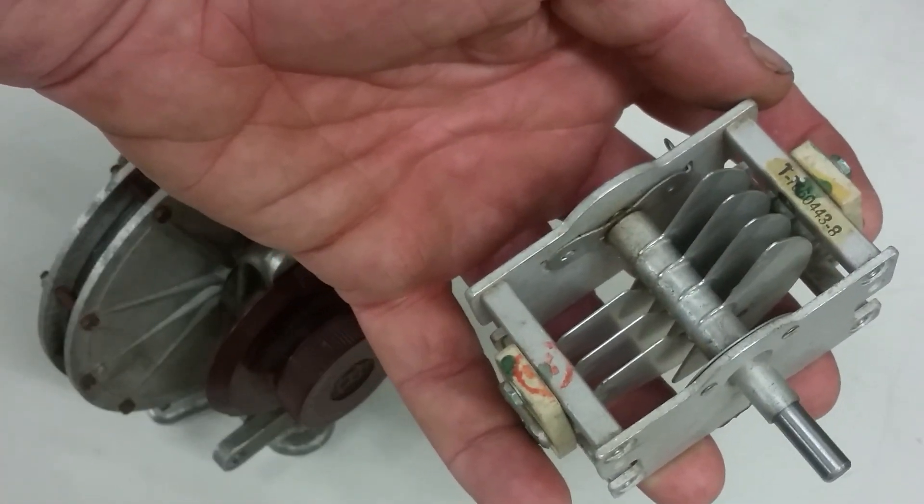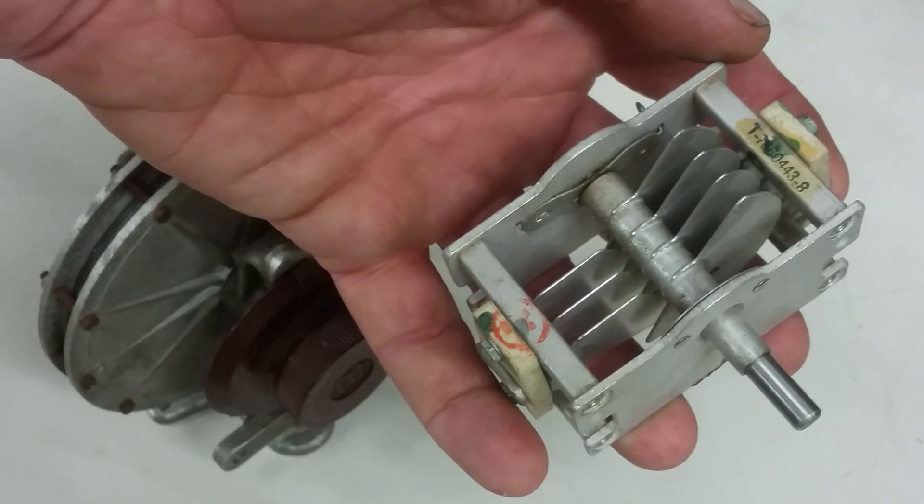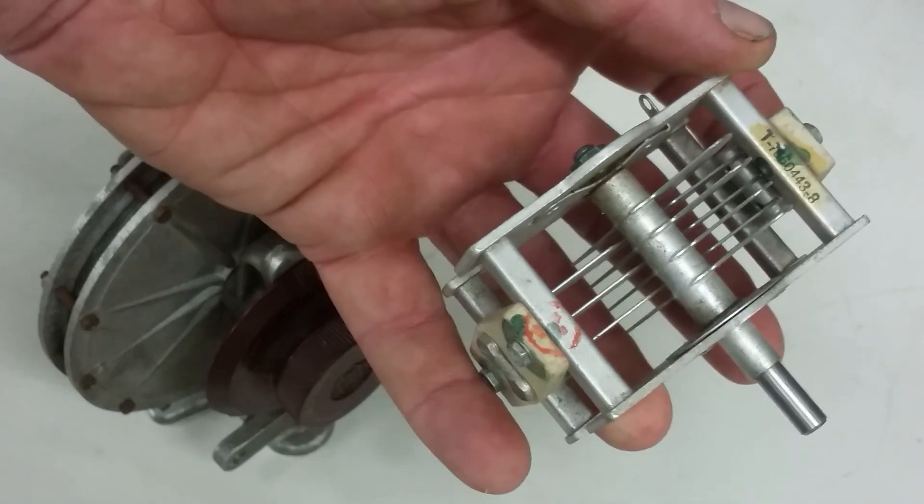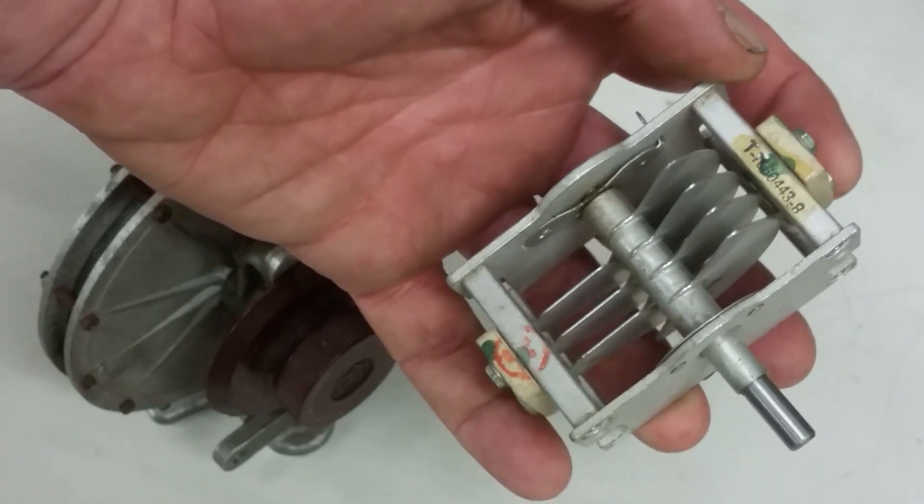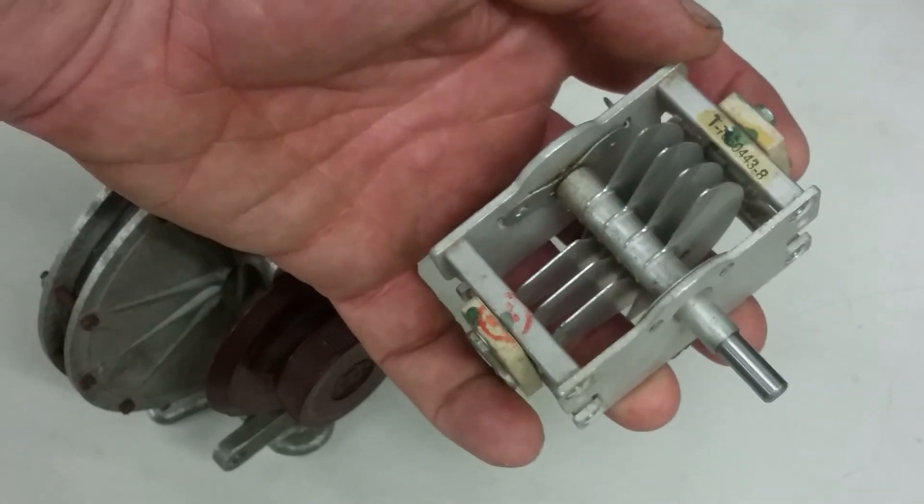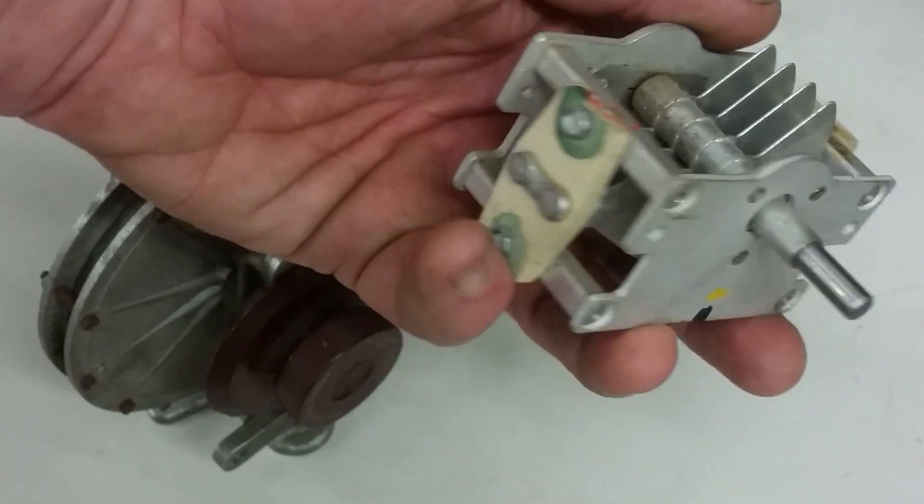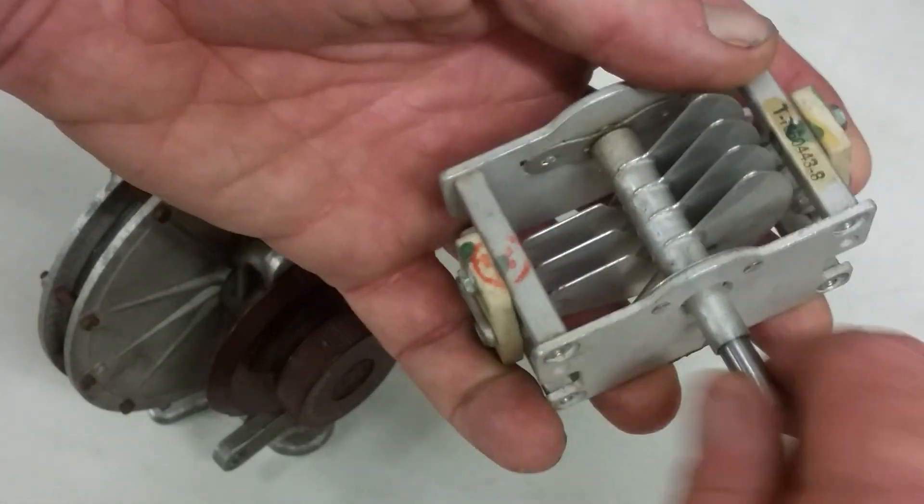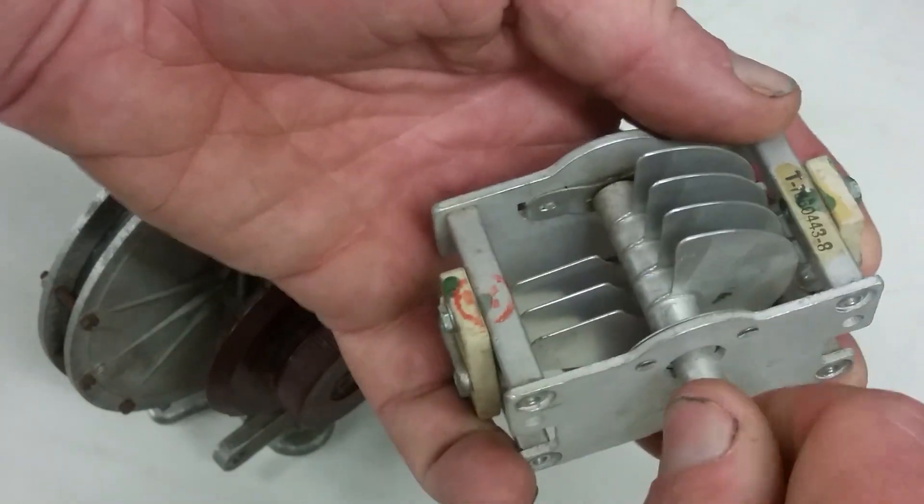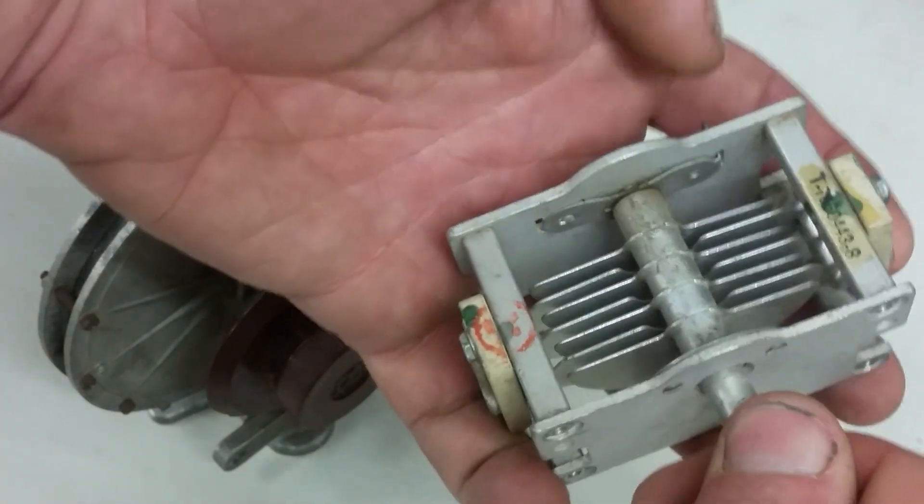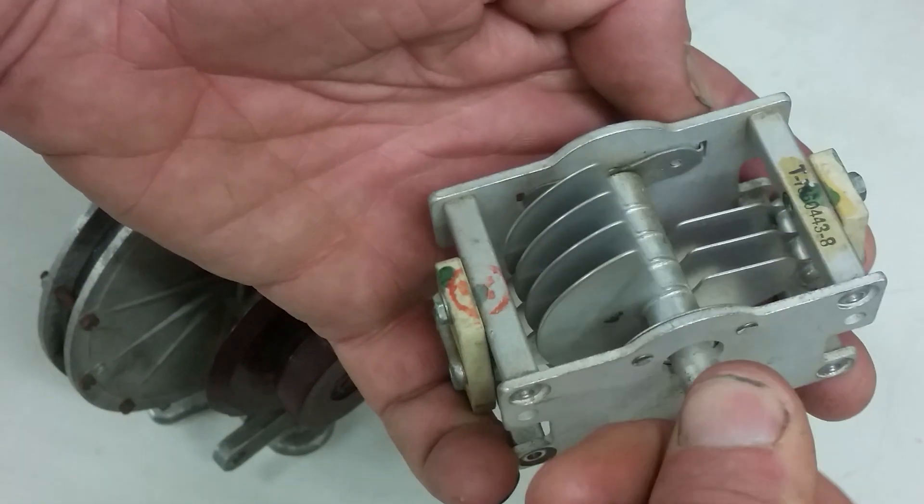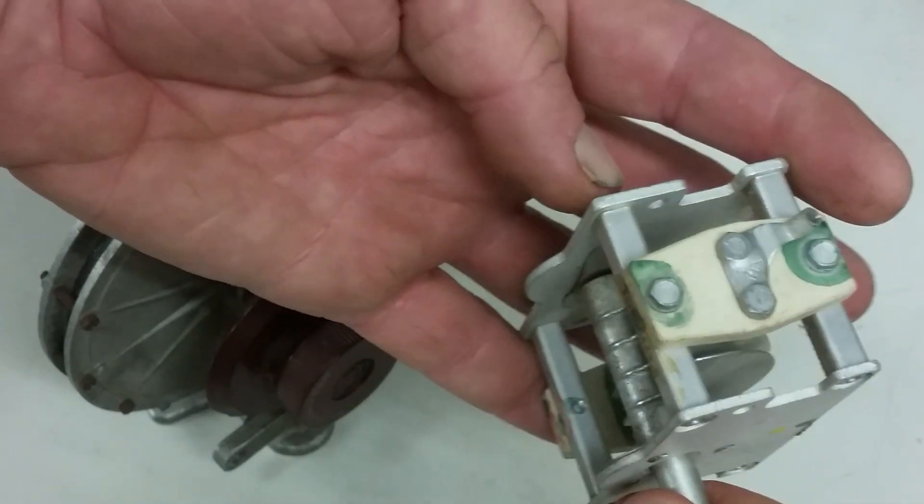This is a roughly 1940s World War II era variable capacitor, pretty high voltage. I think there's only 5 to 30 picofarads. You can pretty much see how it works. You turn the knob, the two sets of plates, the area between them changes, thus the capacity. Pretty simple.